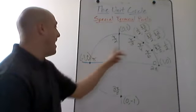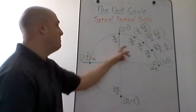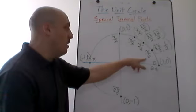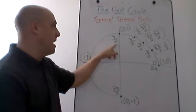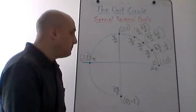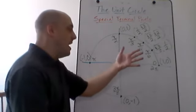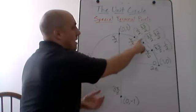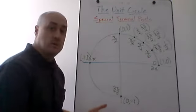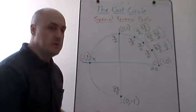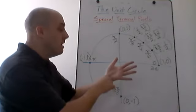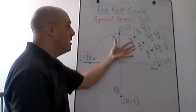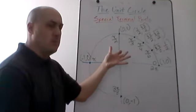When using the trig hand, the first thing to remember is: pinky is 0, ring finger is pi over 6, middle finger is pi over 4, index finger is pi over 3, thumb is pi over 2. Think about it in terms of fractions of pi: one-sixth, one-fourth, one-third, one-half. You always have a 2 in your palm — the 2 represents the denominator of all these fractions. Every single one of those fractions is something over 2.